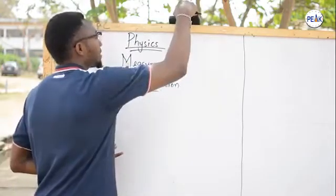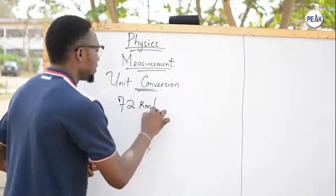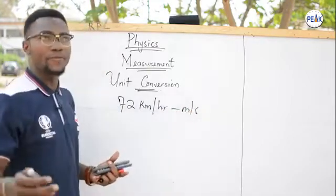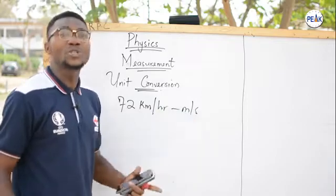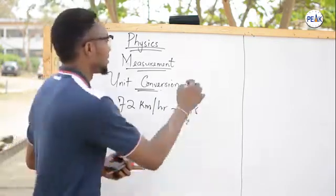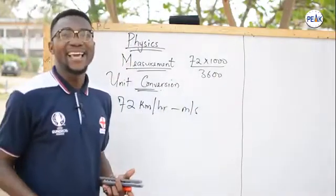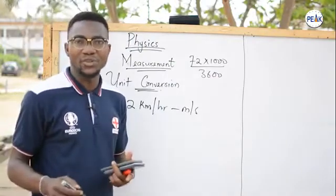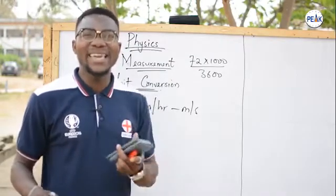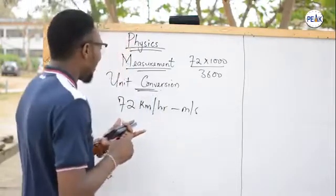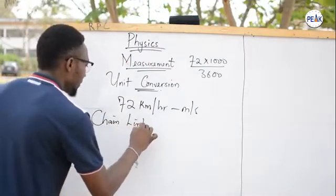Let me give you the trick of how to convert properly. Let's take the example of converting 72 kilometers per hour to meters per second. I'm going to give you this trick under what I term the chain link conversion method. If you know how to use the chain link conversion method, you will never get any conversion question wrong.